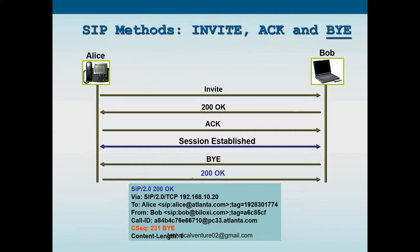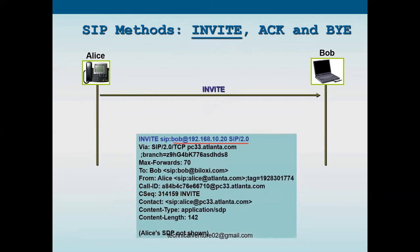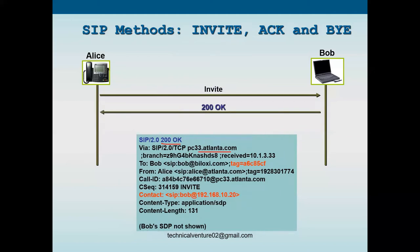Let me show you something related to the CSeq header. In this INVITE message you can see there is a CSeq header showing 314159 INVITE. Whenever you get a reply from Bob to Alice, you will see the same CSeq number. In the 200 OK, the CSeq contains the same number — 314159 INVITE — meaning this 200 OK is the reply to that INVITE message.